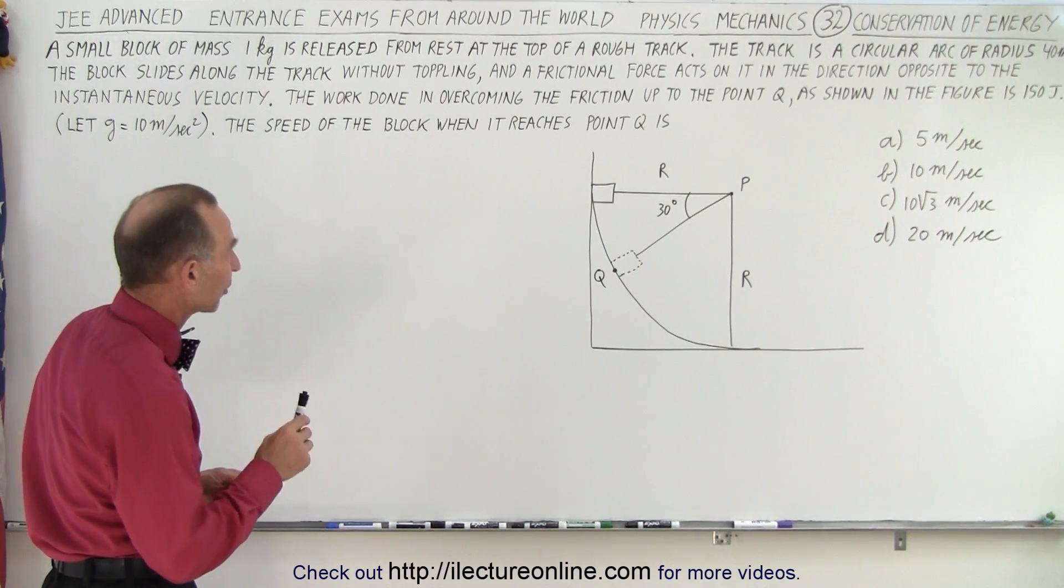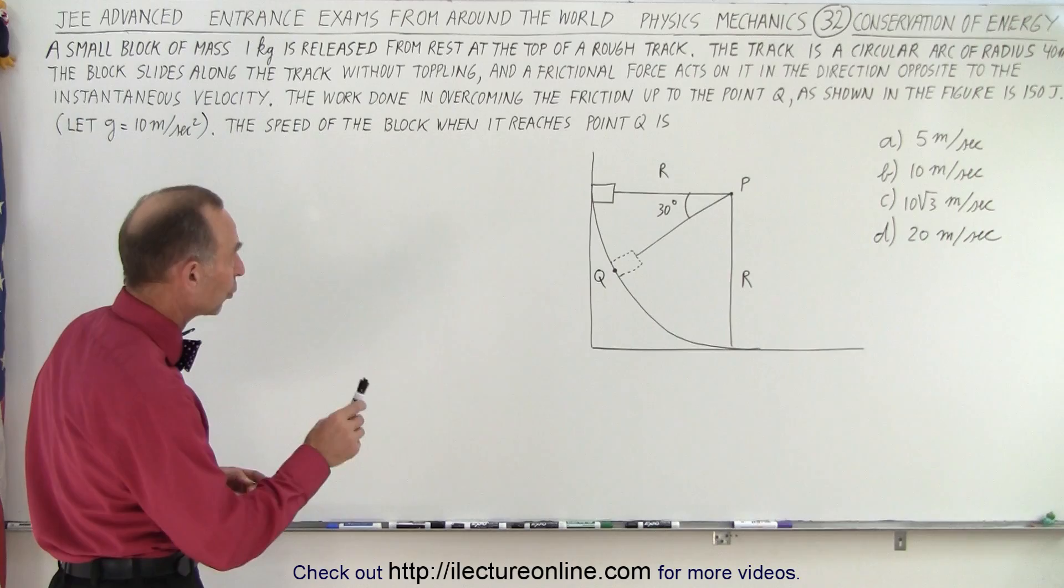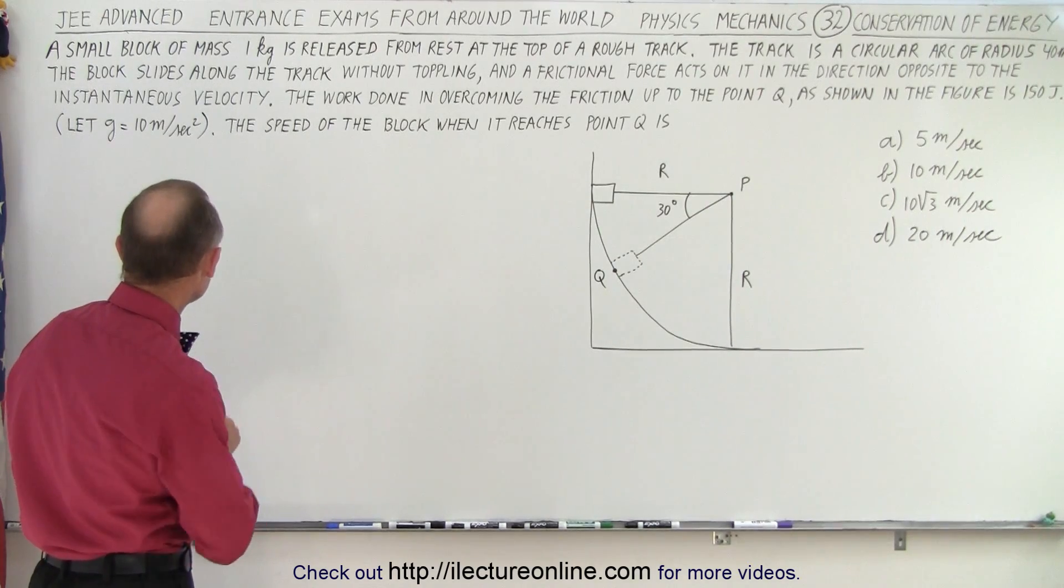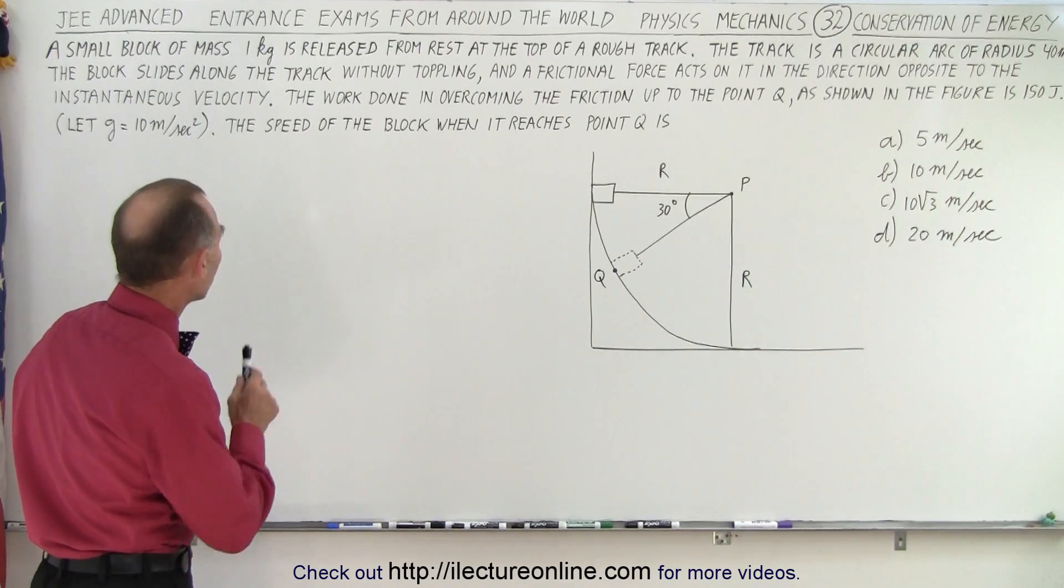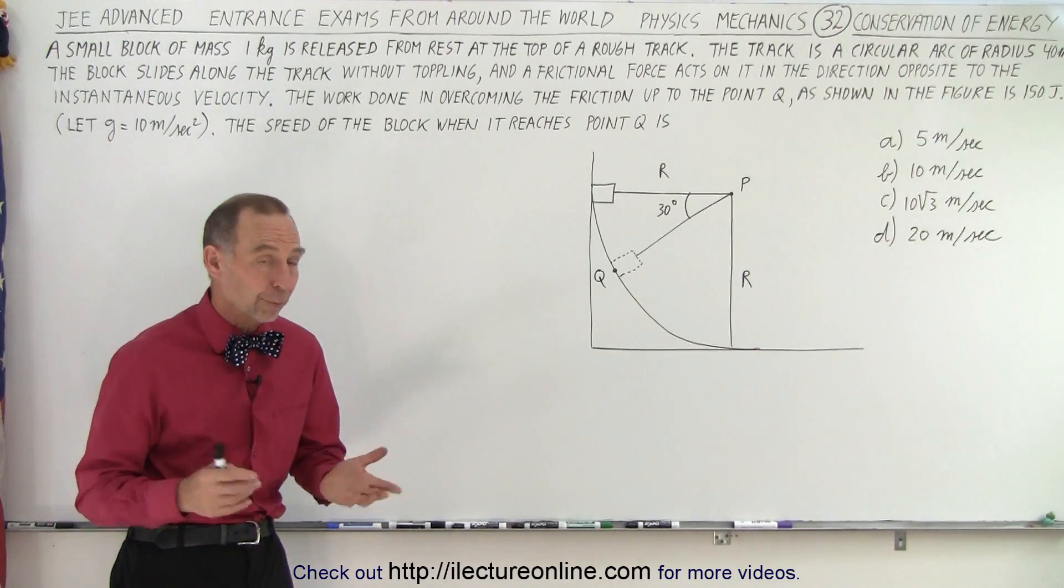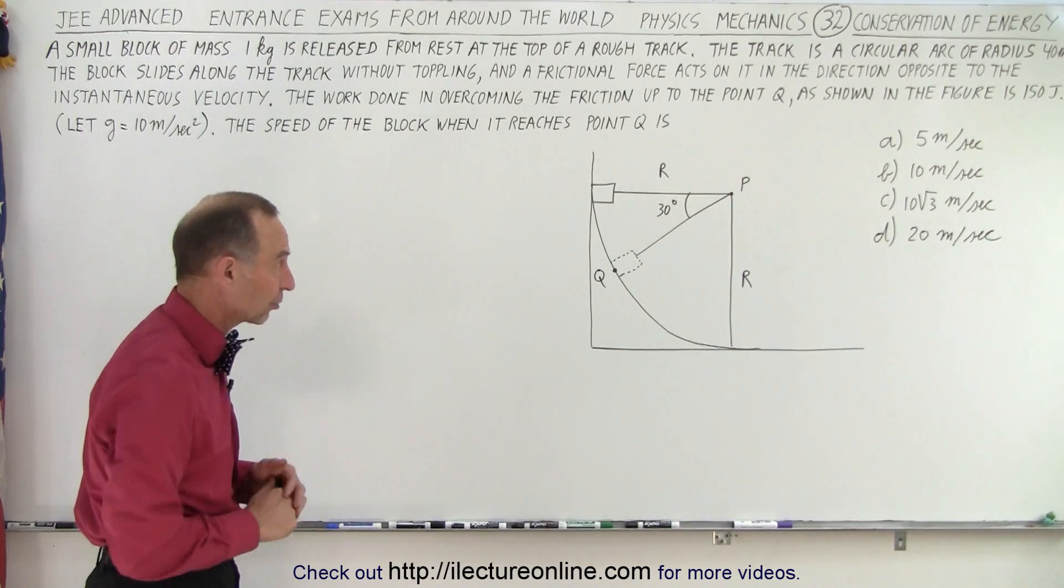The work done in overcoming the friction up to point Q as shown in the figure is 150 joules. Let g equals 10 meters per second squared. The speed of the block when it reaches point Q is, and they give you four possible answers. Only one of those answers is correct.